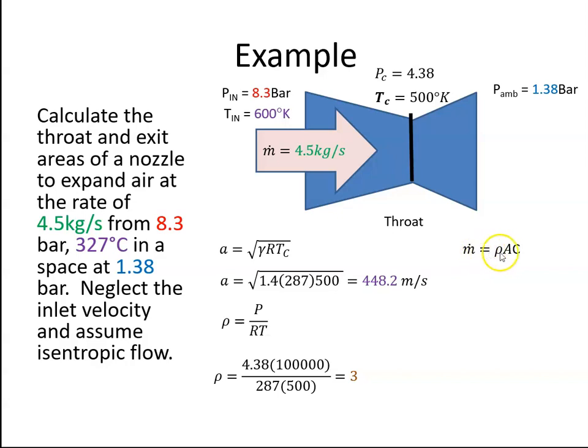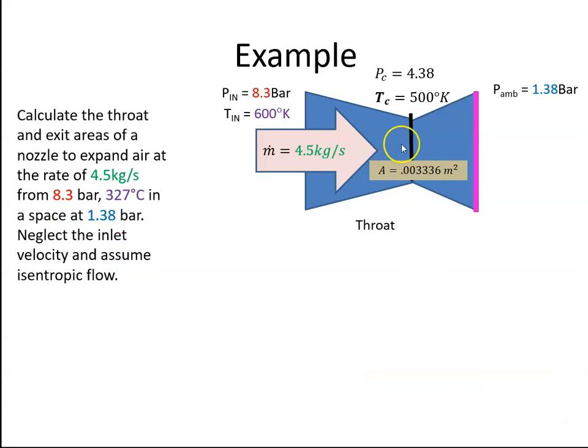And I also know that the mass flow of air is equal to rho AC. I can put the values in. So the mass flow is 4.5, we were given that. The density is 3 here at this point, and the area we were asked to calculate. And the velocity was 448.2 meters per second. So if I plug those values in, I just transpose that equation. A is equal to M dot divided by rho C. So it's 4.5 divided by 3 times 448.2, and that gives me 0.003336 meters squared. So that's the area at the throat.